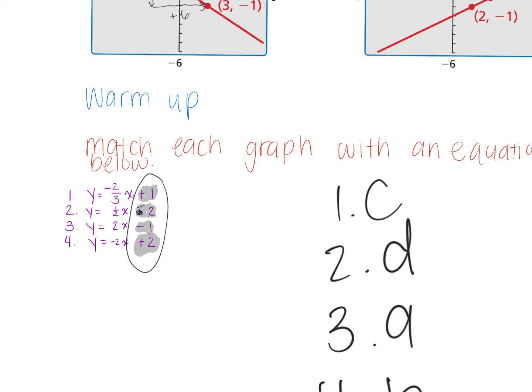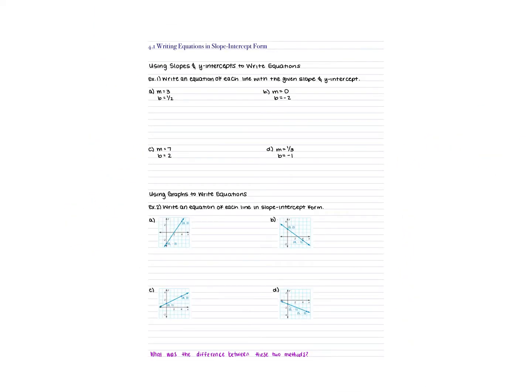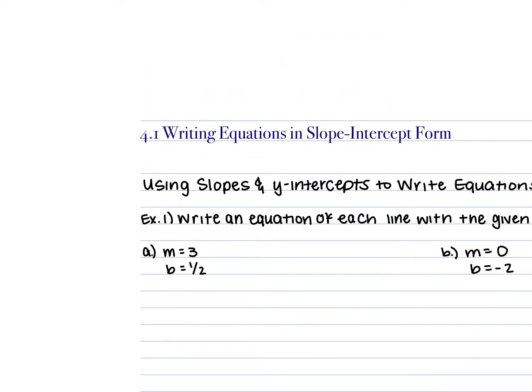Okay guys, today we start Chapter 4. I know Chapter 3 was a lot. Chapter 4 starts off a lot easier than Chapter 3 did, but it builds on the stuff from Chapter 3, so we have to make sure that we know slope and y-intercepts. Instead of graphing, we are going to start with a graph or information and write the equation. Next to 4.1, where it says 'writing equations in slope-intercept form,' please underline 'writing equations.' That's the big difference — we're not going to be given the equation anymore; we have to come up with it ourselves.